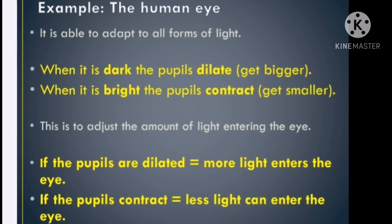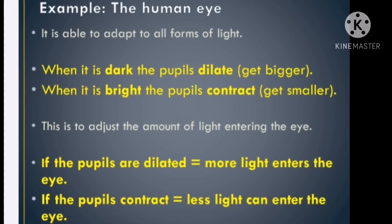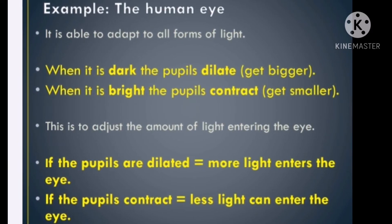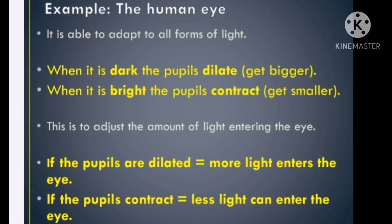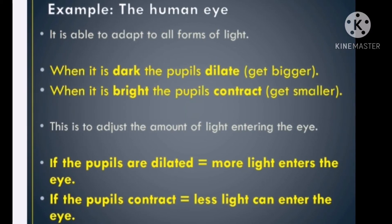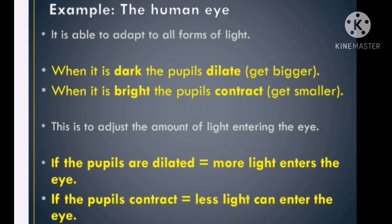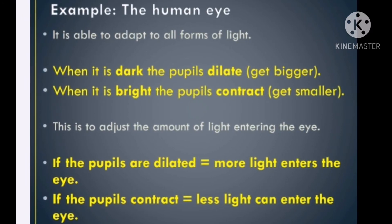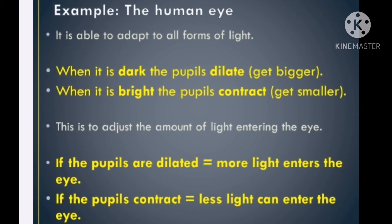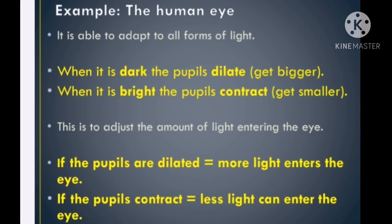For example, the human eye is able to adapt to all forms of light. When it is dark, the pupils dilate, means get bigger. When it is bright, the pupils contract, means get smaller. This is the way to adjust the amount of light entering the eye.